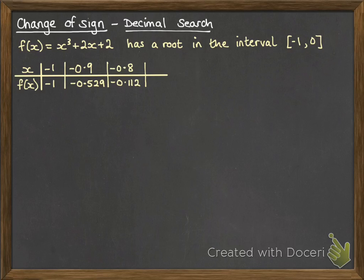Next is -0.8. Again, the answer is negative, and then we get -0.7. Here we get our first positive value. So here we have a change in sign between -0.8 and -0.7.